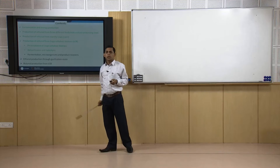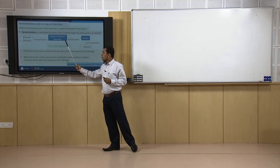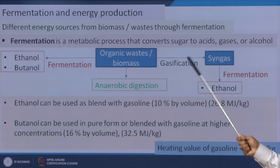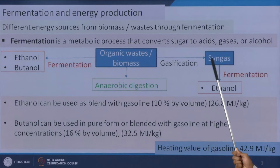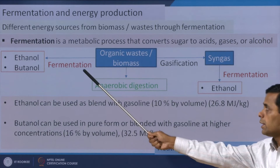We will first see fermentation and energy production. If we use organic wastes or biomass for energy production, we have some options. One is directly through fermentation we can get ethanol and butanol. We can make syngas after drying this waste and gasification, then syngas can further be converted to ethanol through fermentation. We have already discussed anaerobic digestion, in which fermentation converts organic compounds to acids and then to methane — but we are not concentrating on that here. We will concentrate basically on ethanol and butanol production through these two routes.